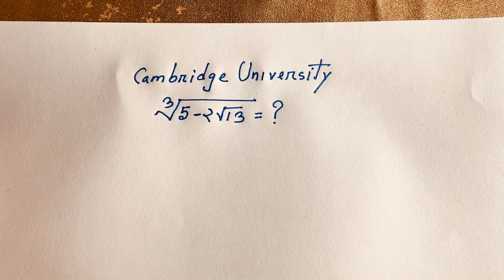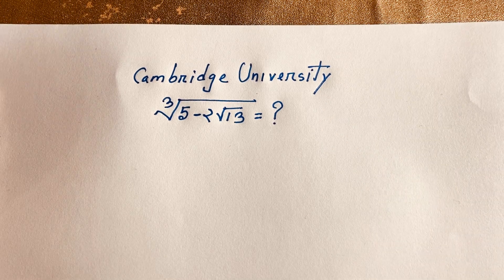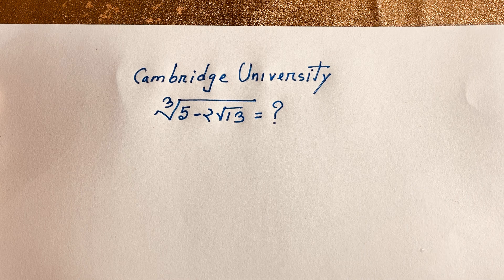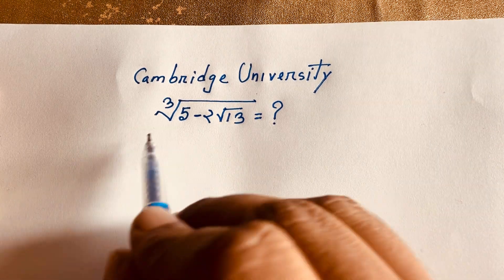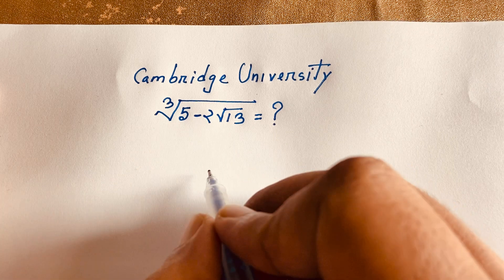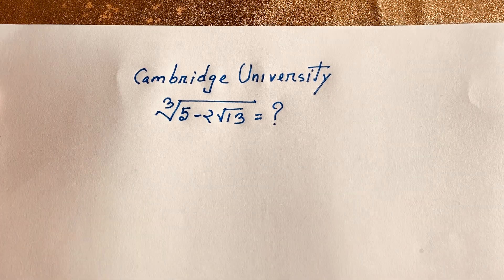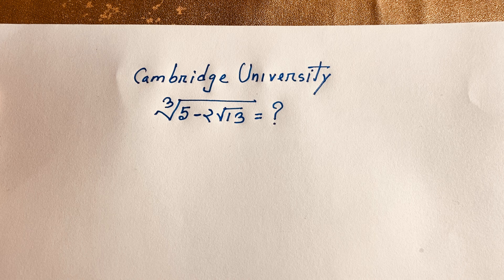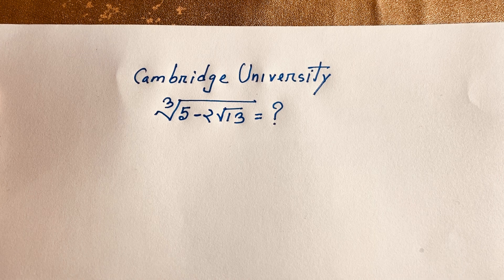Hello everyone. In this video we solve this interesting radical math olympiad question. The question is: cube root of (5 minus 2 square root 13) is equal to what? How do we solve this?